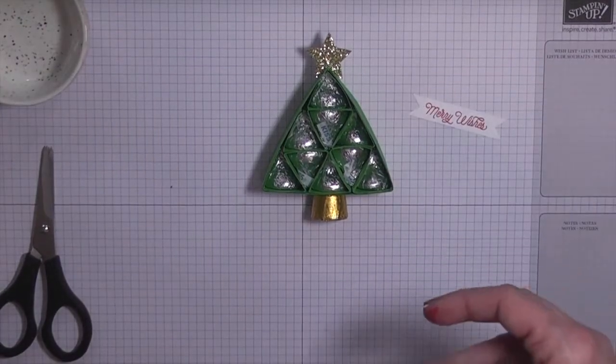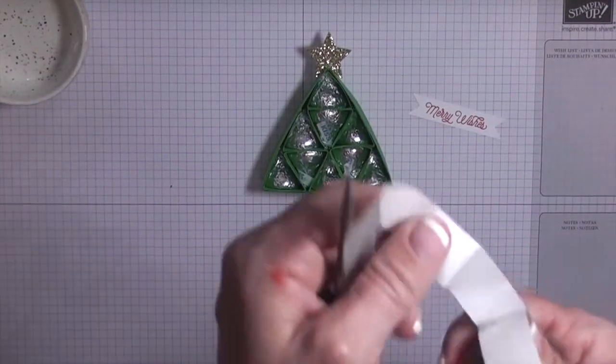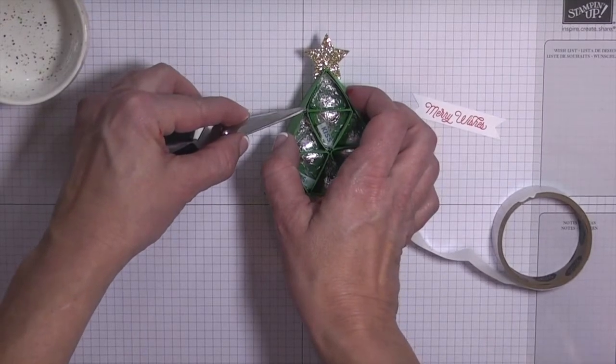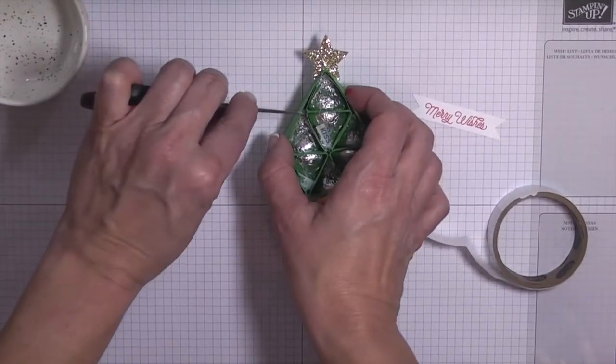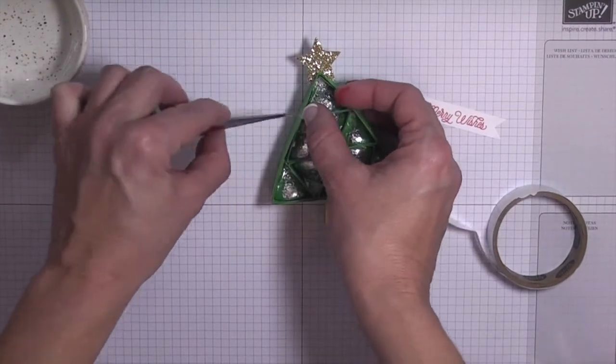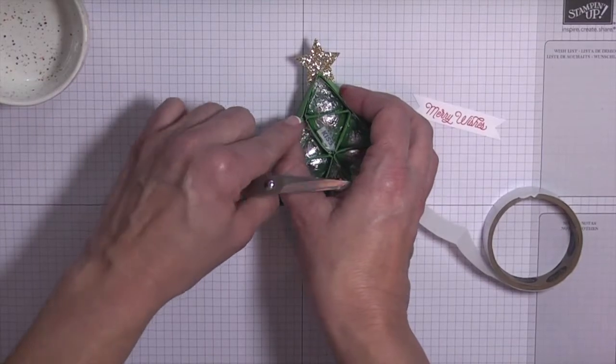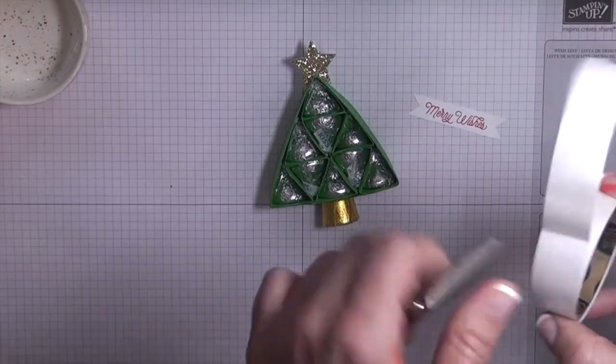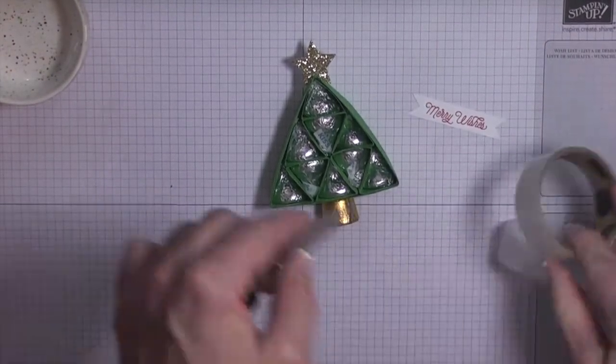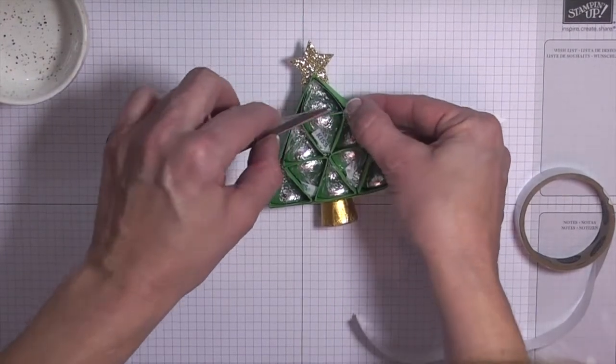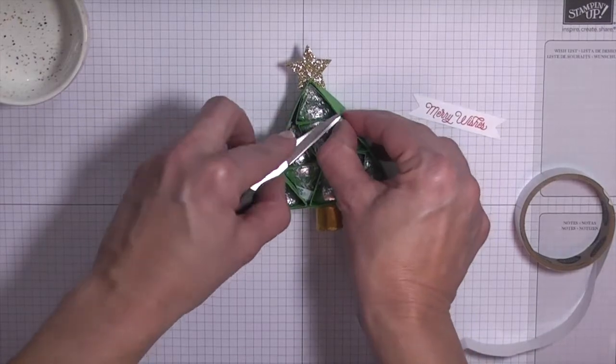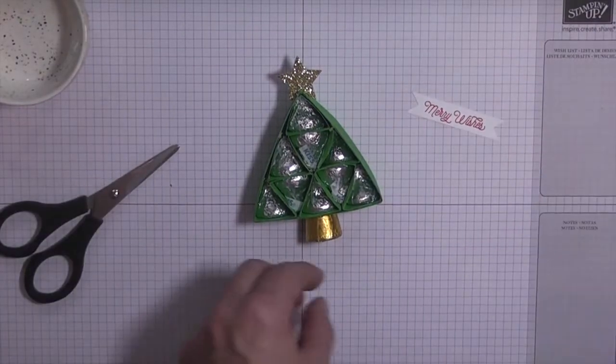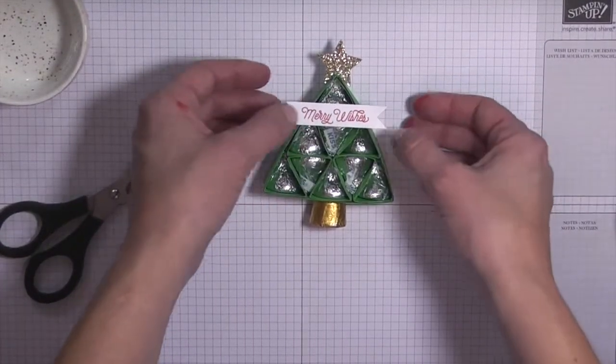So I'm just going to glue the Merry Wishes right there. And what I did is I just got my glue dots. And the easiest way I found to do this is just to take my scissors. And then I'm just putting the glue dots right here on the frame. Because I know that I want it to go right at the top of the second layer. So just get two glue dots and that should be enough. Just stick them right there. Okay. And then just put your banner right there.